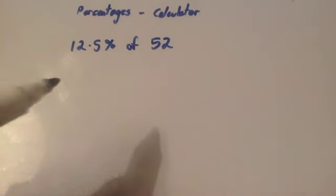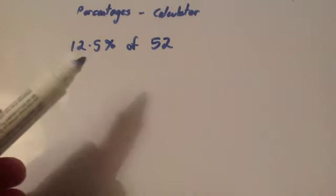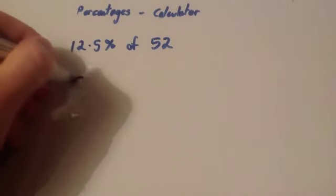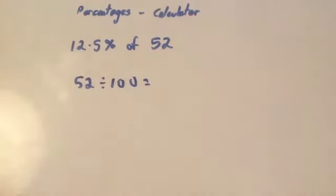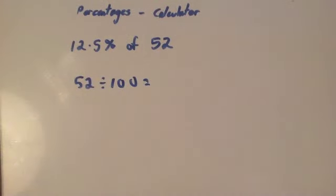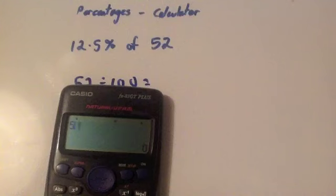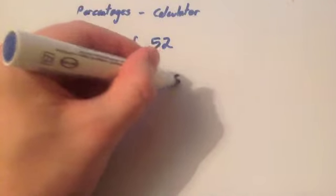Let's have a look at another question. The question asks to work out 12.5% of 52. So the first thing you do is take your 52 and divide by 100. That gives you 1%. So you do 52 divided by 100, which equals 0.52. So 1% is 0.52.